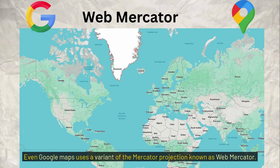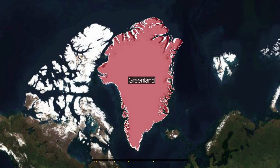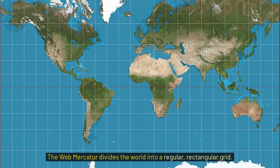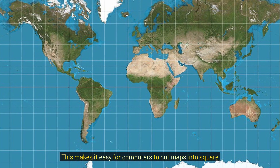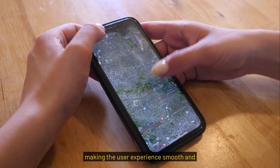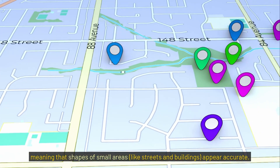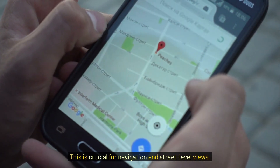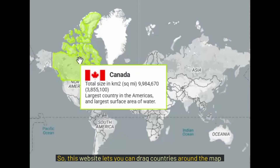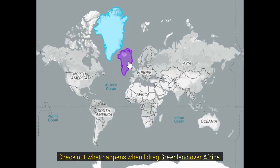Even Google Maps uses a variant of the Mercator projection known as Web Mercator, which stretches Greenland as you zoom out and significantly exaggerates land masses farther from the equator. The main reason is practicality: Web Mercator divides the world into a regular rectangular grid, making it easy for computers to cut maps into square tiles and efficiently load only what the user needs. This grid-based approach ensures seamless panning and zooming. It also preserves angles locally, meaning shapes of small areas like streets and buildings appear accurate — crucial for navigation. Apple Maps, Bing Maps, and OpenStreetMap all use Web Mercator too. There's a clever website called TrueSize that lets you drag countries around the world to see how big they really are when placed closer to the equator — drag Greenland or Africa and it shrinks to its original size.